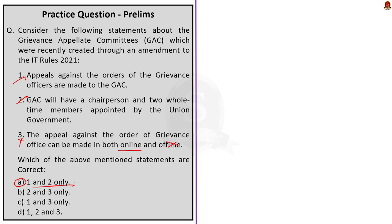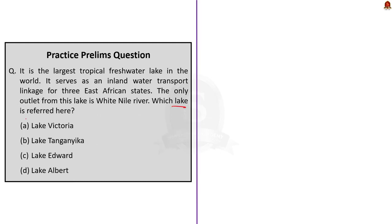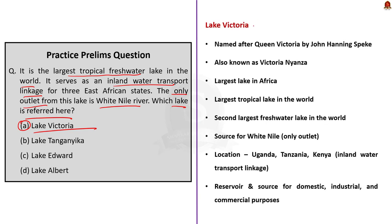The next question gives a description of a lake — the largest tropical freshwater lake in the world, serving as an inland water transport linkage for three East African states, with the White Nile River as its only outlet. The correct answer is option A — Lake Victoria. This question was framed because in November, a plane crash occurred in Lake Victoria in Tanzania, so UPSC might ask about it.